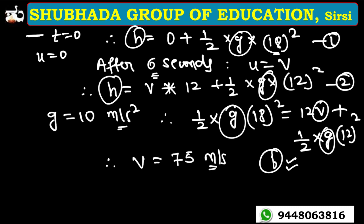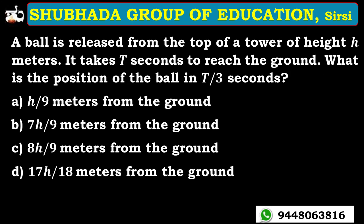Hope it's clear to everyone. If you consider both conditions and apply the formula, you will definitely get the answer. The next problem: a ball is released from the top of a tower of height h meters. If it takes t seconds to reach the ground, what is the position of the ball at t divided by 3 seconds?